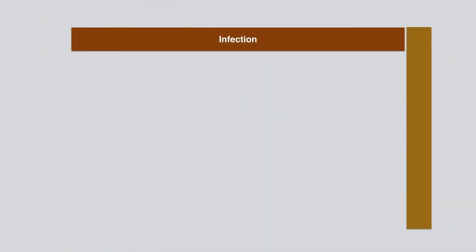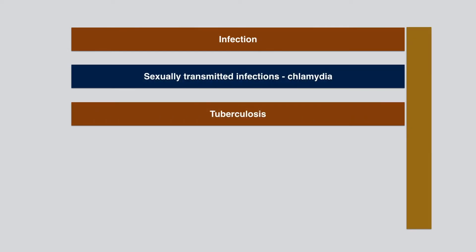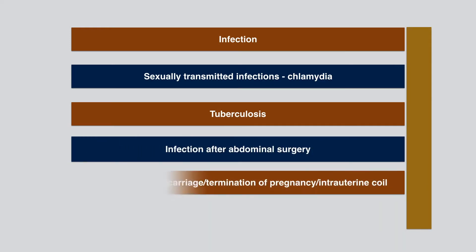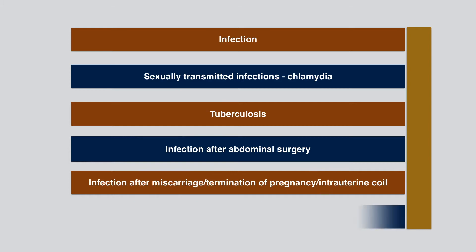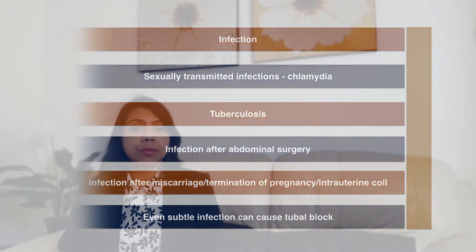The most common cause of damage to the fallopian tube is infection. Sexually transmitted infections like chlamydia, gonorrhea, tuberculosis, infection after abdominal surgery, miscarriage, termination of pregnancy, or intrauterine coils. Even subtle infection which may not have given you any symptoms can still cause blockage to the fallopian tubes.